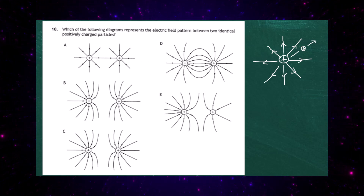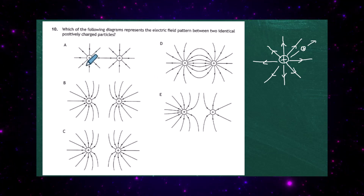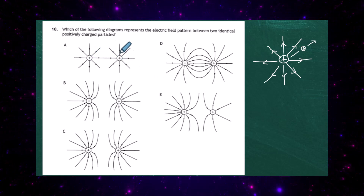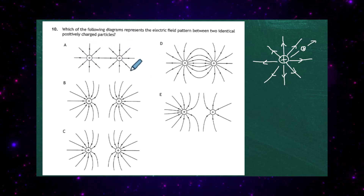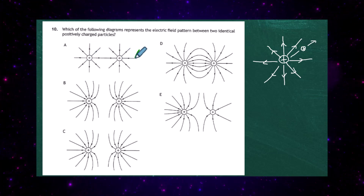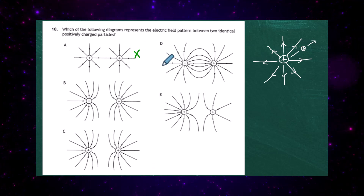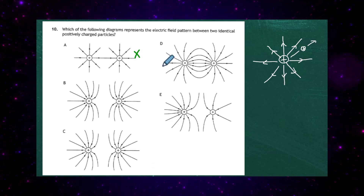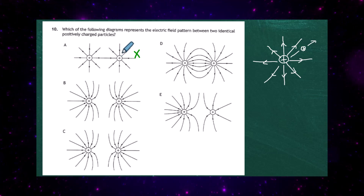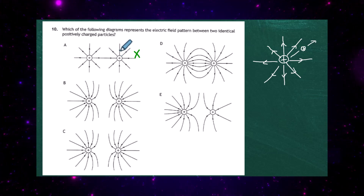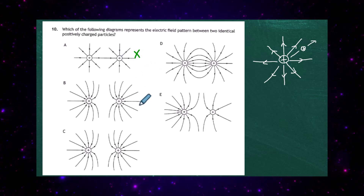Looking at letter A, we can see the lines are going away on one side but coming in to the positive charge on the other. Remember, that's wrong — the field lines must show where a positive charge would experience a force and in what direction. The arrows pointing inward would indicate a positive charge is attracted to that positive charge, which is wrong.